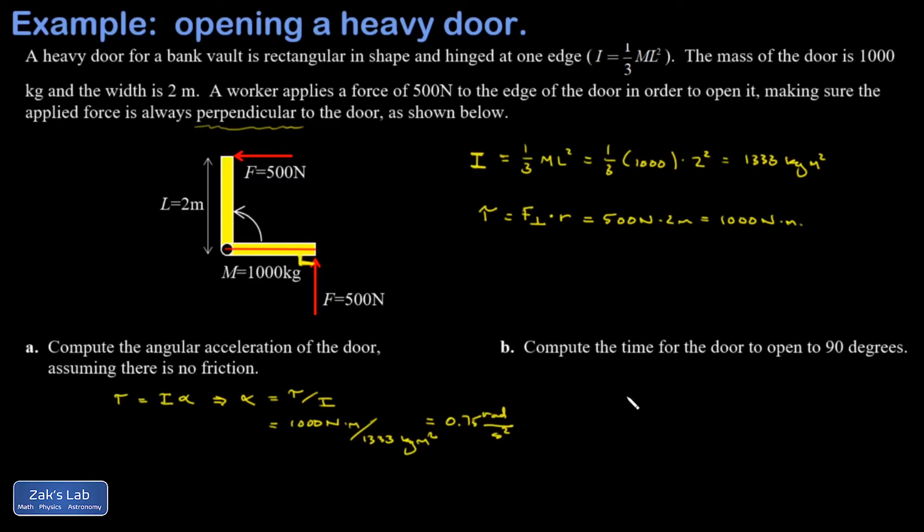In part B, I'm asked for the time for the door to open by 90 degrees. You have to be careful here and remember that we're working in radians when dealing with all these angular quantities.